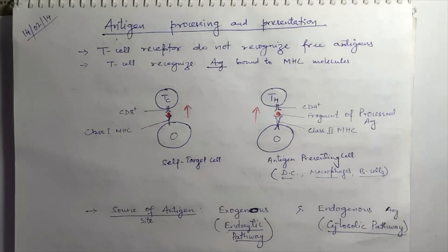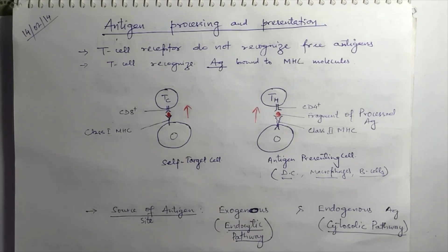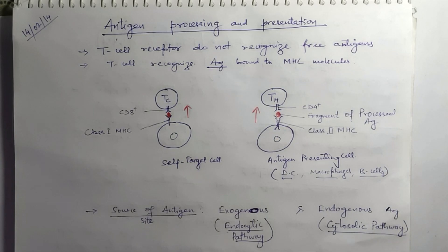Hello friends, here I am reading my new topic: antigen processing and presentation. As you all know, T cells do not have the potential to capture, trap, or mount an immune response by itself against the antigen, so they need the help of other cell types — either antigen presenting cells, or other altered body cells where a particular pathogen has attacked and altered the cell's physiological functioning. These cells first process the antigen and then present it with the help of MHC molecules to T helper or T cytotoxic cells.